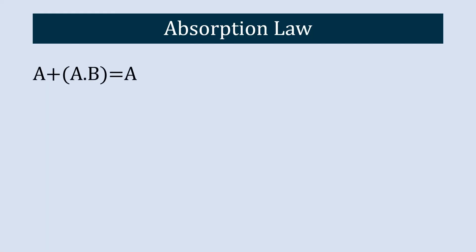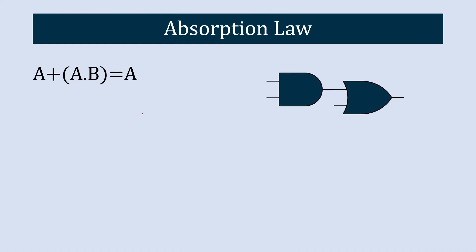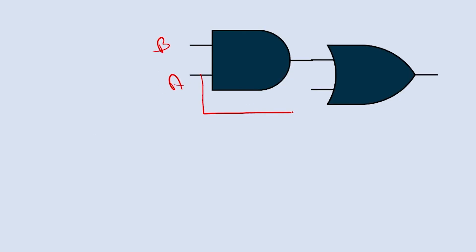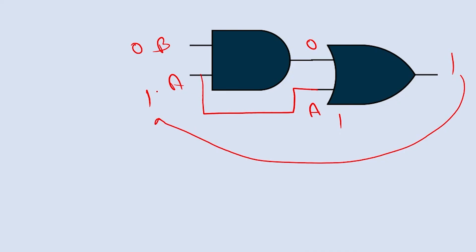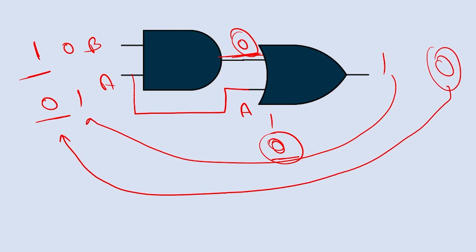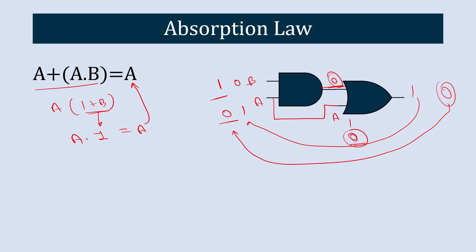The second absorption law is A plus A dot B equals A. Simplifying: taking A common gives A into (1 plus B), and 1 plus B equals 1, so A into 1 equals A. To verify with a circuit: with B equal to 0 and A equal to 1, A dot B gives zero, and zero plus one gives one, which equals A. With B equal to 1 and A equal to 0, A dot B gives zero, and zero plus zero gives zero, which equals A. In both cases the output equals A, proving the absorption law.